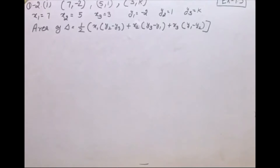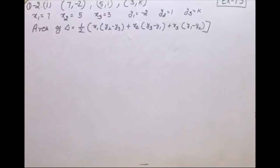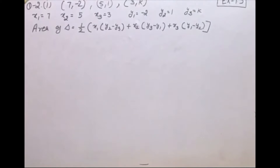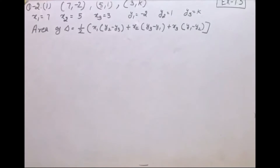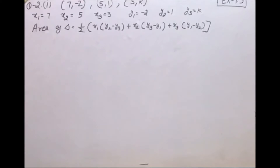Question number 2: in each of the following, find the value of K for which the points are collinear. Collinear condition है जब भी हमारे पास collinear दे रखा होता है — any three points lie on a straight line, a single line पे जब कोई भी three points lie करते हैं, उनको बोलते हैं collinear।